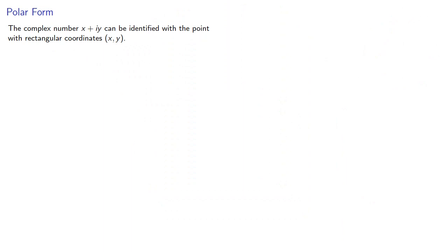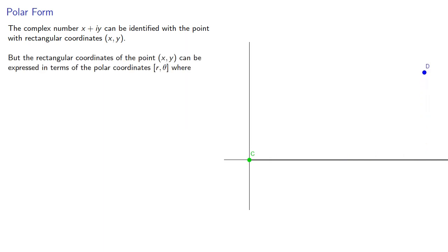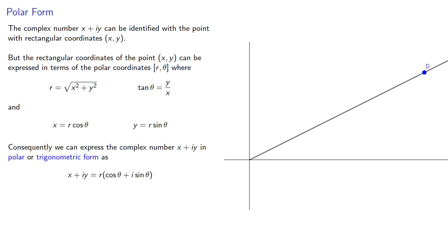The complex number x plus iy can be identified with the point with rectangular coordinates (x, y). But the rectangular coordinates of the point (x, y) can be expressed in terms of the polar coordinates (r, theta), where the polar and rectangular coordinates are related by the following equations. Consequently, we can express the complex number x plus iy in polar or trigonometric form as r cosine theta plus i sine theta, where r is the modulus and theta is the argument. We often use the shorthand r cis theta.